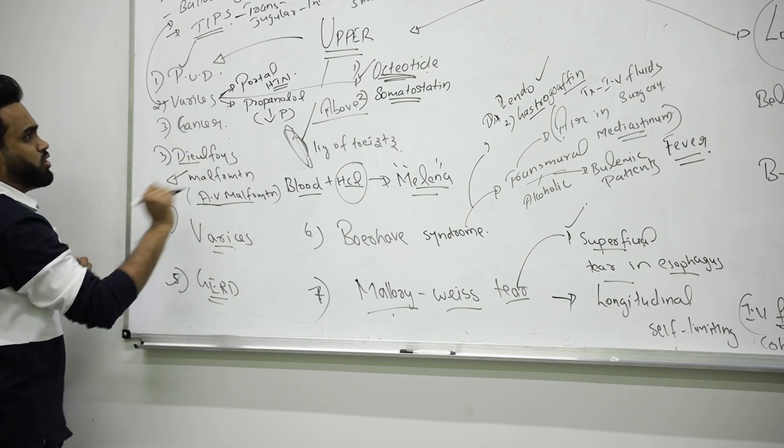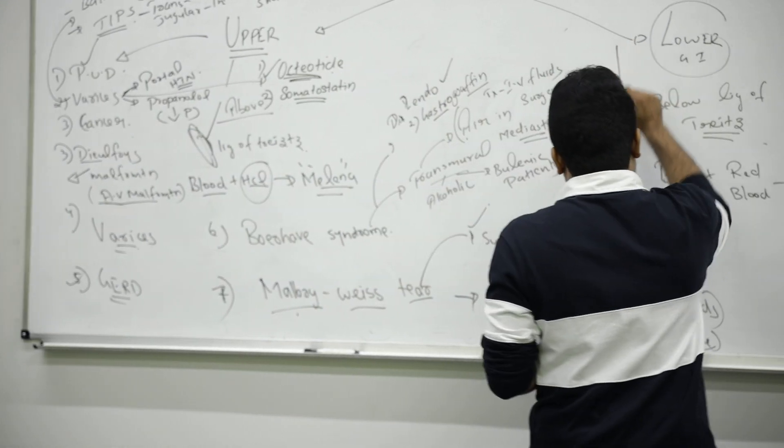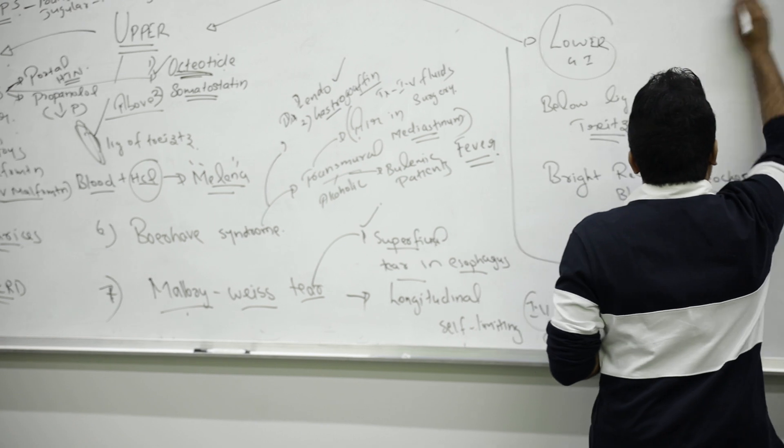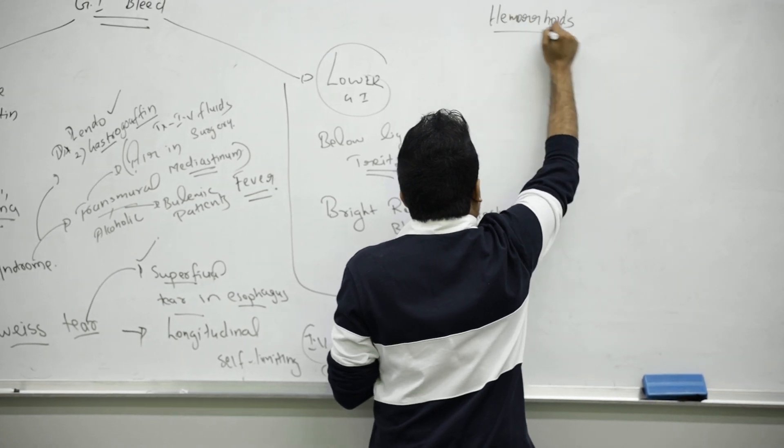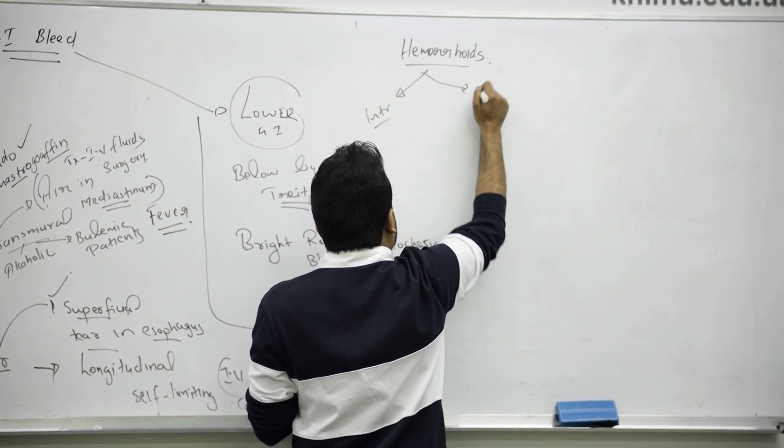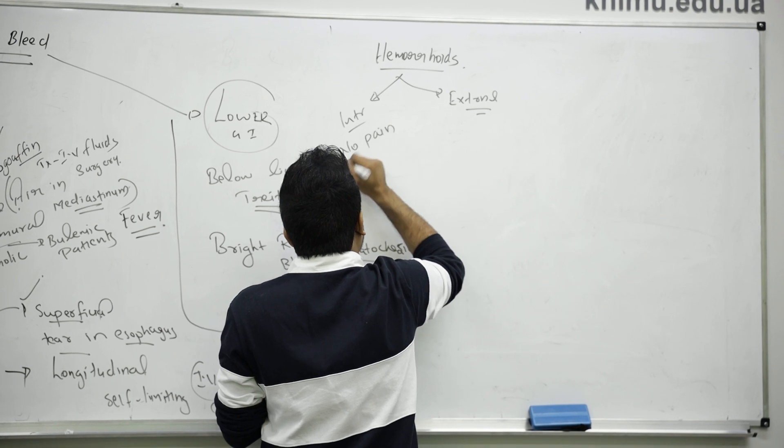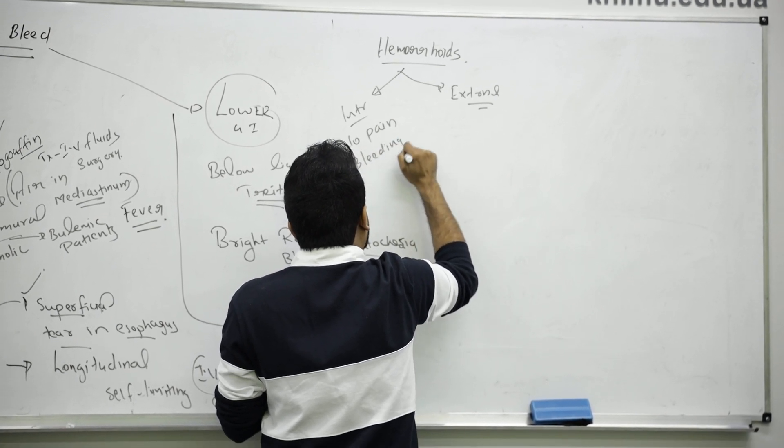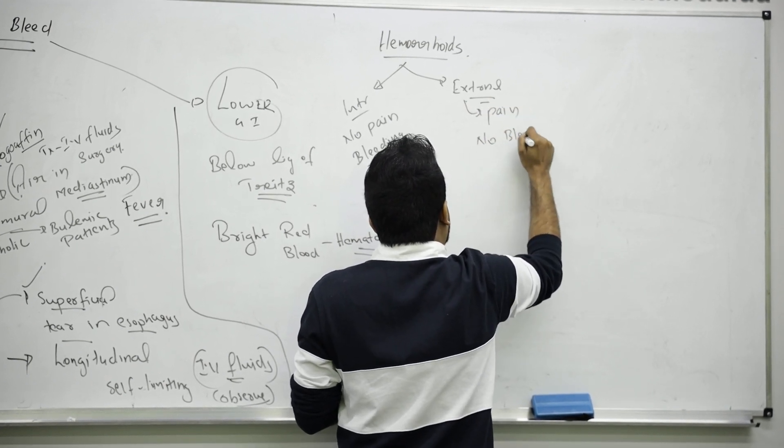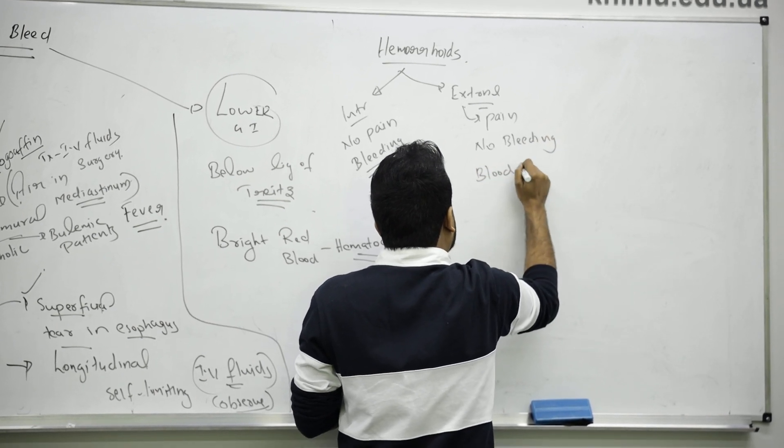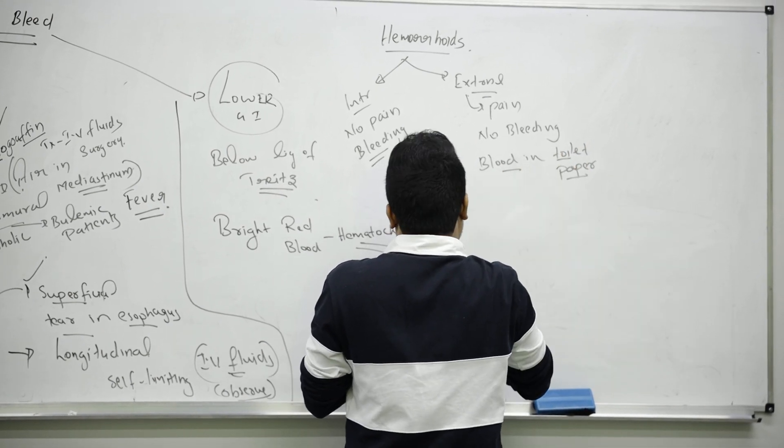This whole course was upper GI bleed. Now talking about lower GI bleed, we have different causes that include hemorrhoids. Hemorrhoids can be internal and external. As you all know, internal there will be no pain but there will be bleeding. External there will be pain but no bleeding, or we can say patient will have blood on toilet paper.